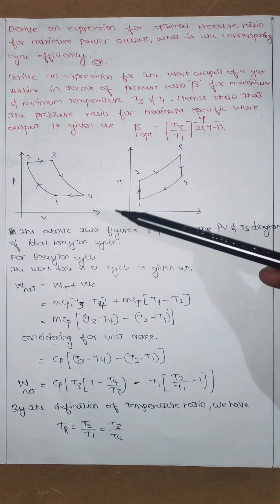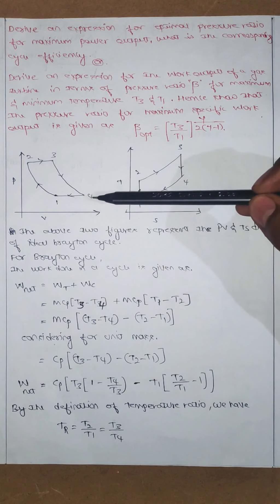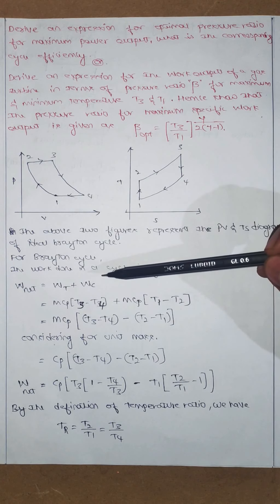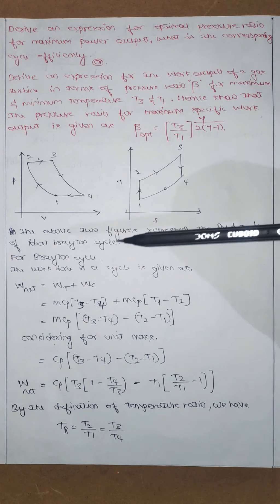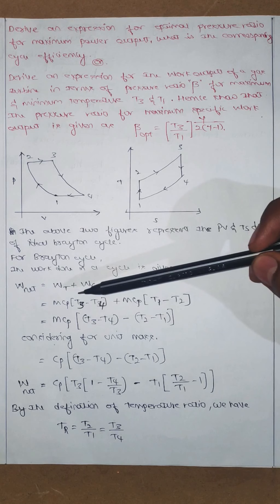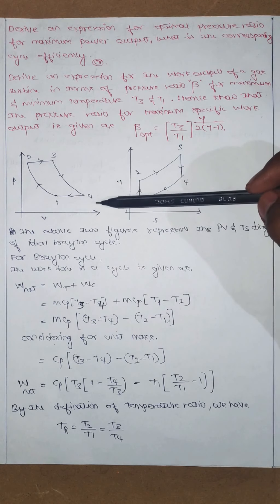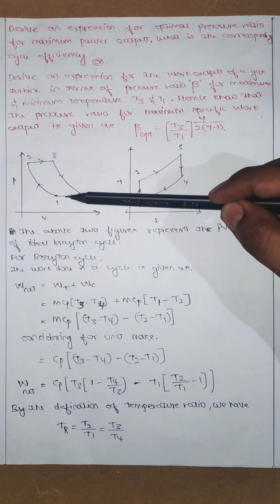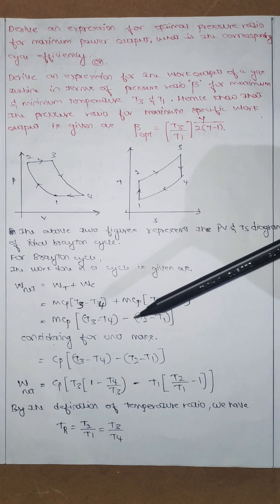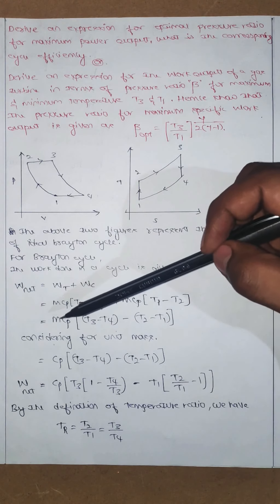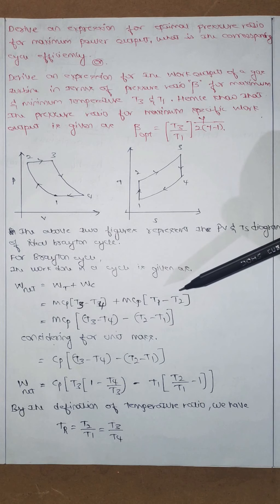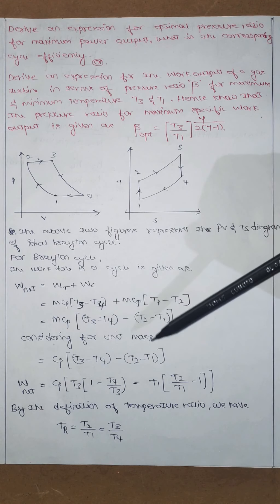The net work is the sum of turbine work from state 3 to 4 and compressor work from state 1 to 2: W_net = W_T + W_C. Work done is mCp·ΔT, where ΔT is initial minus final. For the turbine, initial state is T3 and final is T4; for the compressor, initial is T1 and final is T2. Taking mCp as common and considering unit mass, the expression becomes Cp[(T3 - T4) - (T2 - T1)].